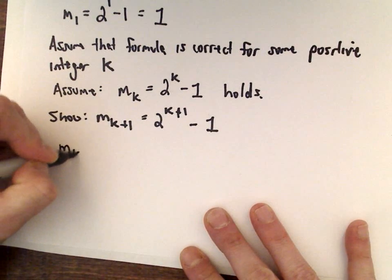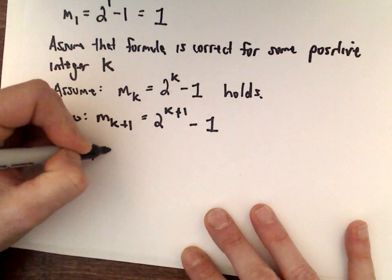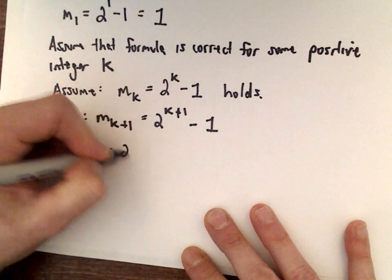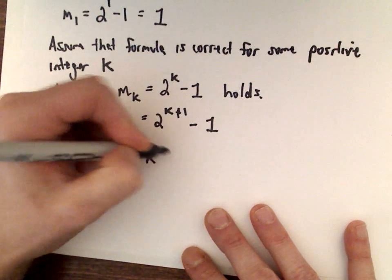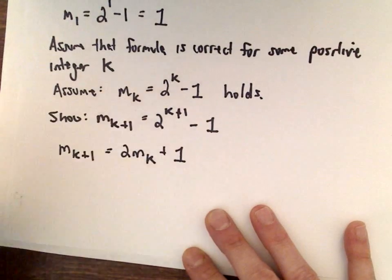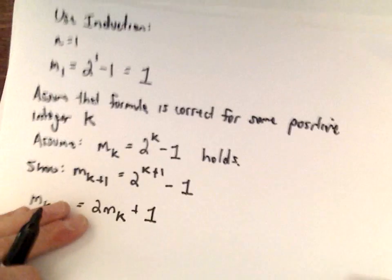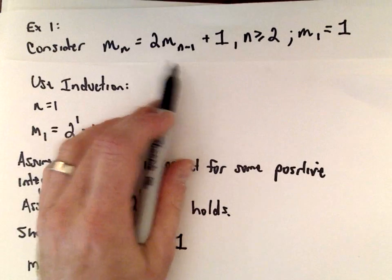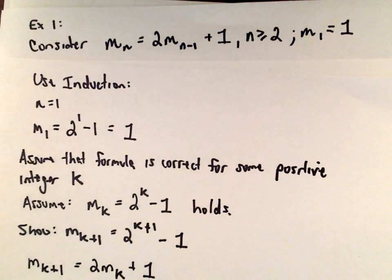According to our original formula, m sub k plus 1 would be 2 multiplied by m sub k plus 1. I'm just using the original definition we started with, but instead of n we're using k.